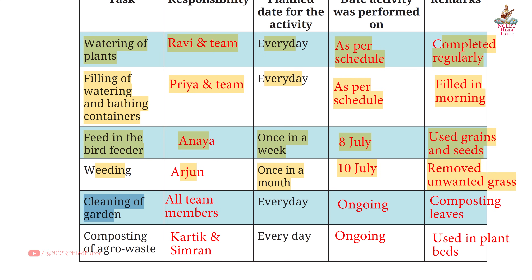Task 5: Cleaning of garden — Responsibility: All team members — Planned: Every day — Performed: Ongoing — Remarks: Composting leaves. Task 6: Composting of agro waste — Responsibility: Karthik and Simran — Planned: Every day — Performed: Ongoing — Remarks: Used in plant beds.